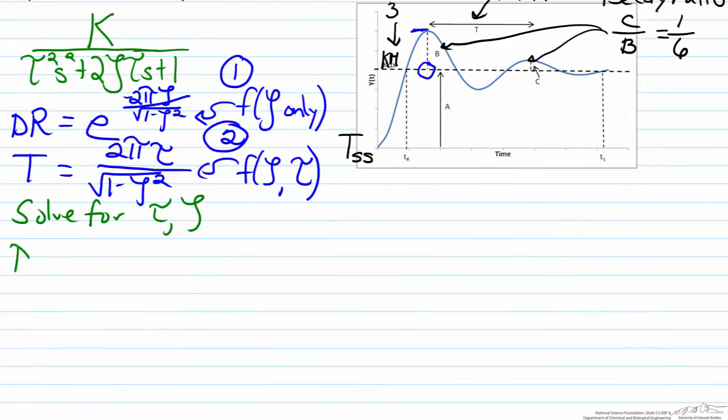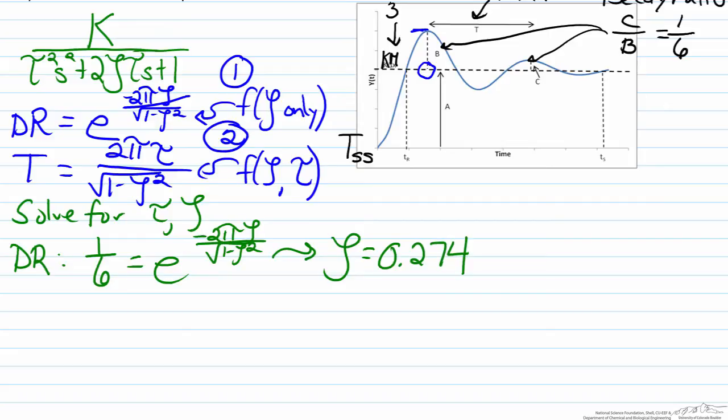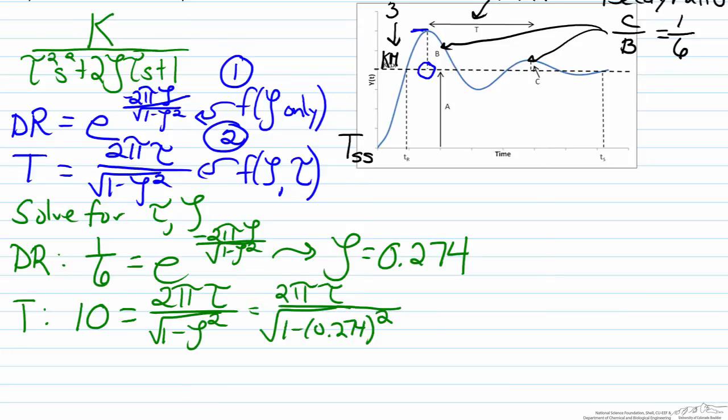So for the decay ratio formula we'll have that 1 sixth equals the exponential, and when the math is done for this we can solve and see that zeta is 0.274. We can do the same thing for the period of oscillation, which is given as 10 equals 2pi tau over the square root of 1 minus zeta squared, and we can substitute in zeta. And when we do this and solve for tau, we find that tau is 1.53 minutes.